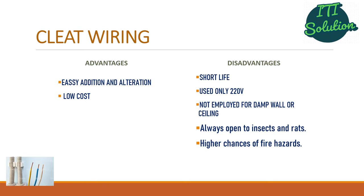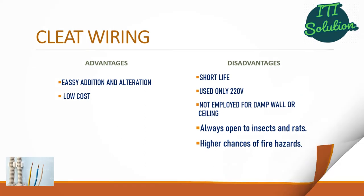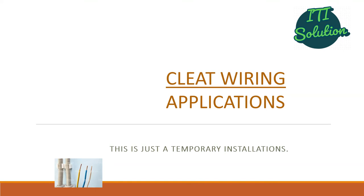Advantages of cleat wiring are easy addition and alteration, and low cost. However, there are many disadvantages: short life, used only up to 20 volts, not employed for damp wall or ceiling, always open to insects and rats which can cut the insulation of wire, and higher chances of fire hazards. For applications, this is just a temporary installation, not used so much — only used in initial times of construction to obtain electricity.